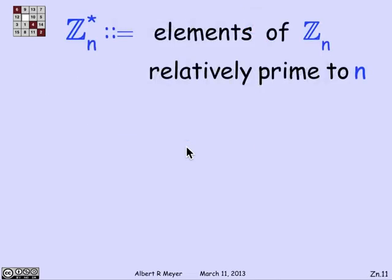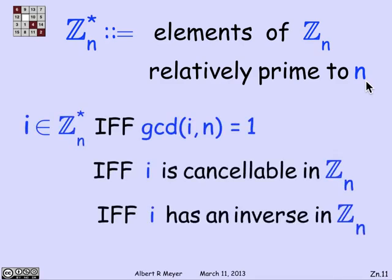Now, the rules that we already figured out for when you can cancel in congruence translate directly over to when you can cancel in Z_n. There's a standard abbreviation that's useful. If I write Z_n*, what I mean is the elements in Z_n that are relatively prime to n, the elements whose GCD with n is 1. An integer i in the range from 0 to n is in Z_n* if and only if the GCD of i and n is 1, or i is cancelable in Z_n, or i has an inverse in Z_n.